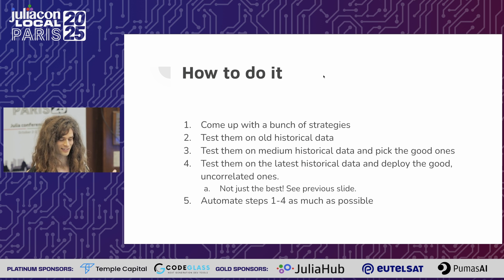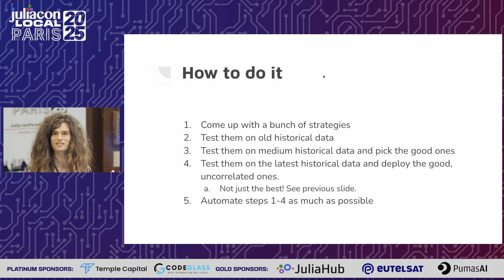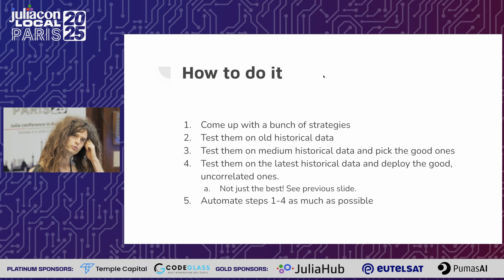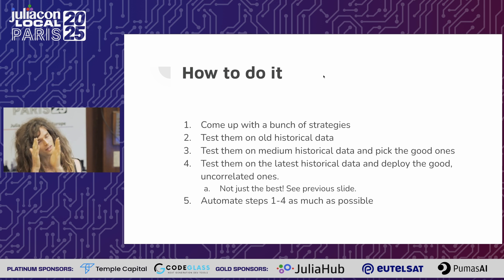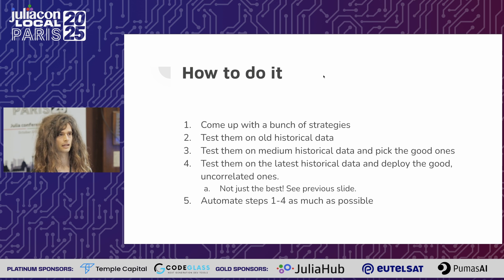So that's hedge funds for folks who might not be familiar. And this is how you do it — trade secrets. First, you come up with a bunch of different strategies. How do you know which ones work? You probably don't. Then you test them on old historical data — now you do know which ones work. Maybe, or maybe they just used to work. So you test them on medium historical data and pick the good ones, then on the latest data. You're not just picking the best ones — take all the good strategies, make sure you're picking uncorrelated strategies, and average them together. Now you have a strategy that's even better than all those things.